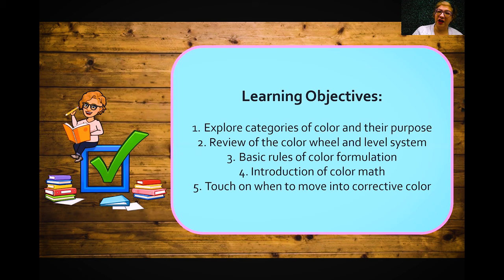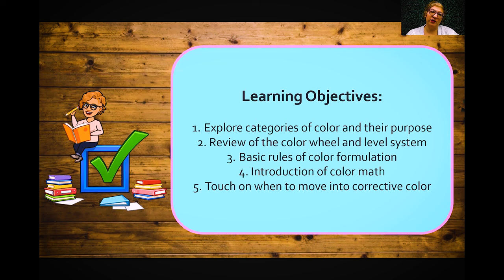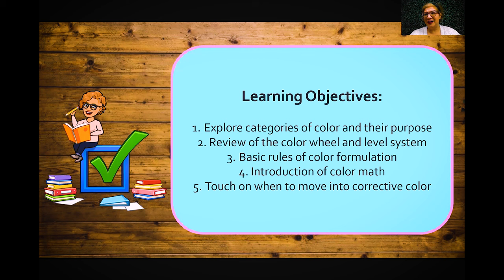Our learning objective today is to explore the categories of color and the purpose of each. We're going to review the color wheel and level system, go into the basic rules of color formulation, and talk about something called color math. I know you didn't go to beauty school to do math, but it's a unique way to look at it because formulas really are just like mathematical equations. We'll also very slightly touch on corrective color — when do we have to transition into it, which techniques do I use.